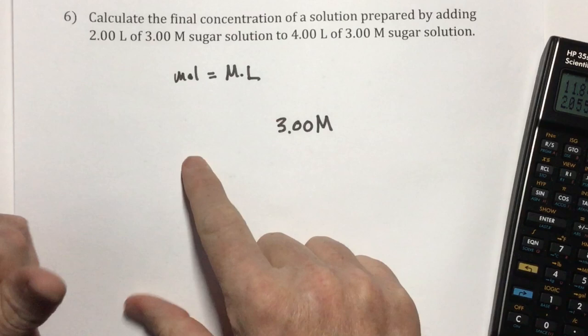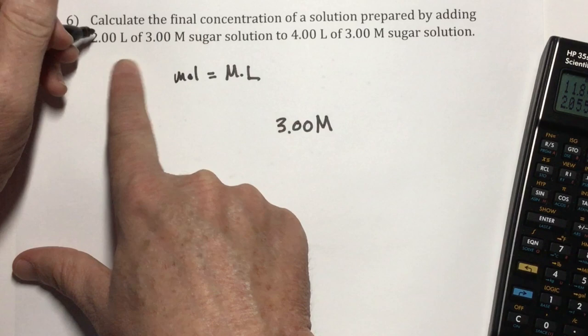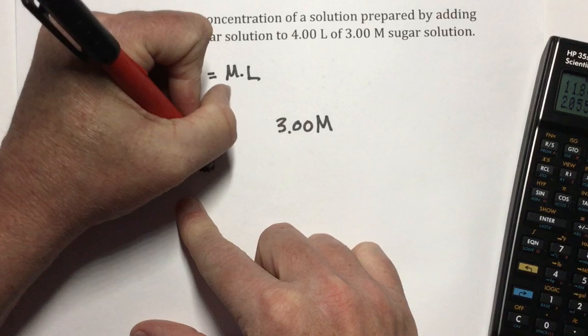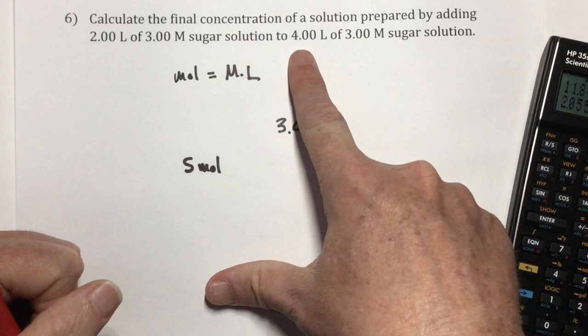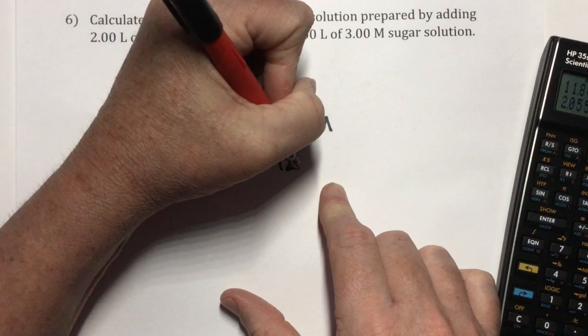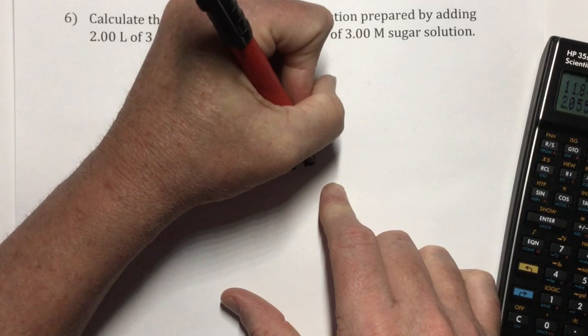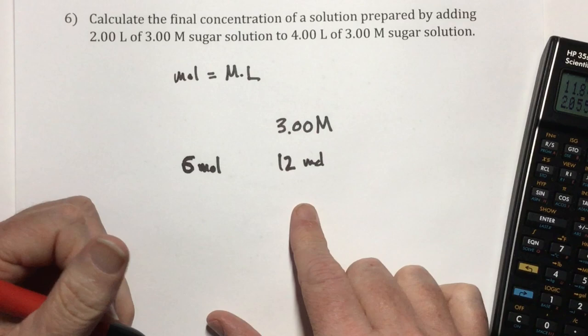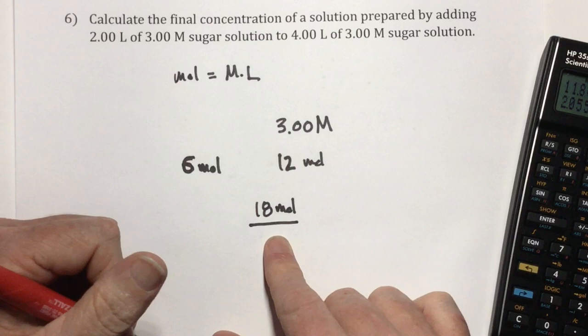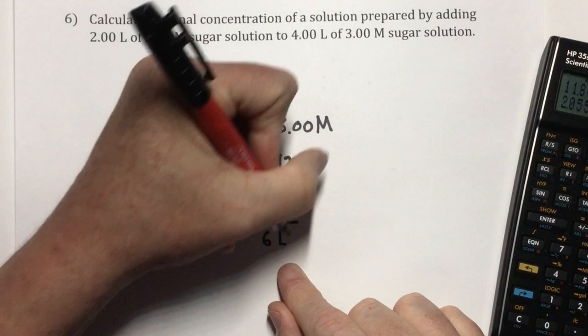Let me verify: molarity times liters equals moles. So 2 times 3 gives 6 moles in the first solution, and 4 times 3 gives 12 moles in the second. After mixing, I have a total of 18 moles. I had 2 liters and 4 liters, so 6 liters total. 18 moles divided by 6 liters: that comes out to a molarity of 3.